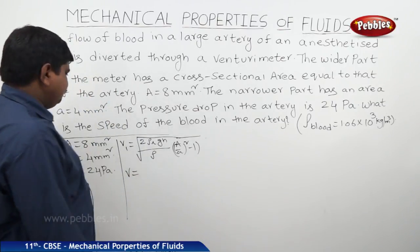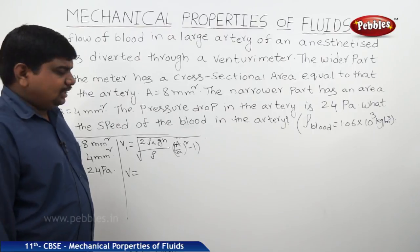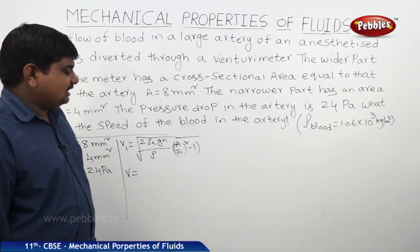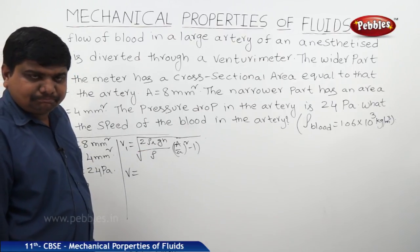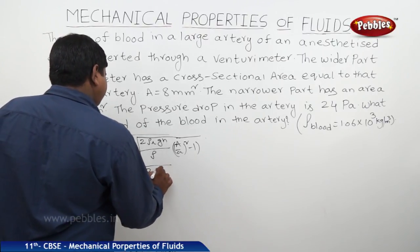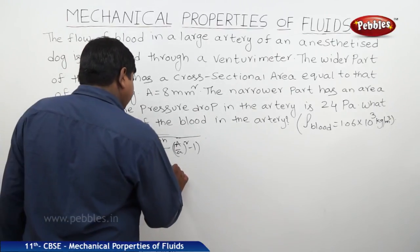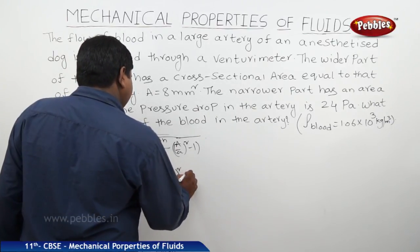Therefore, V is equal to... what is the height and g? It is not needed to calculate this one. This ρgh is nothing but the pressure. So it will be square root of 2P by ρ into A by a whole square minus 1.